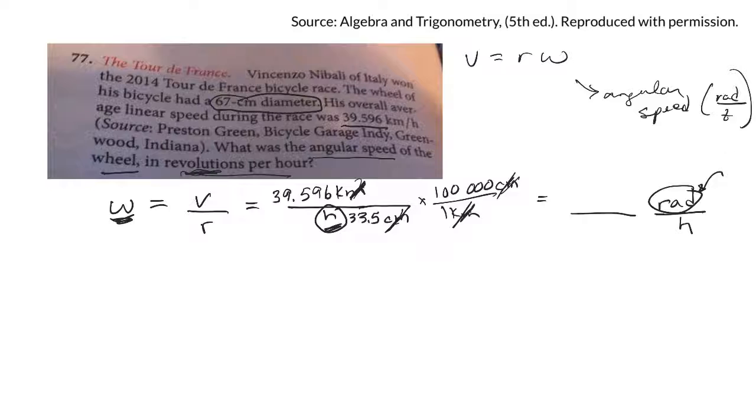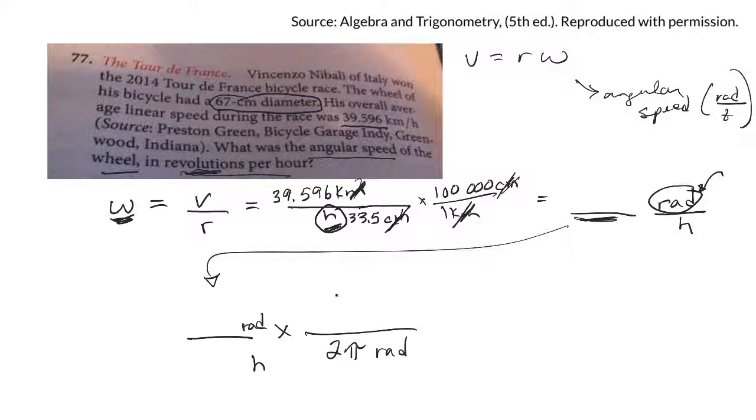Now, the question asks you for revolutions per hour. So you take whatever this number is, and I have to convert that from radians to revolutions. So I can multiply. This is going to be radians per hour. So I need to convert radians to revolution. I know two pi radians are the same as one revolution. So I can cancel those out.